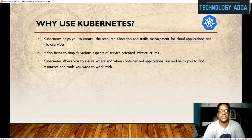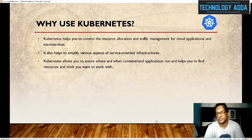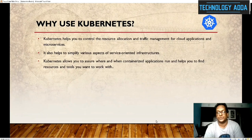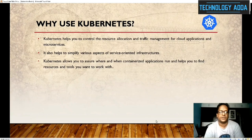Why use Kubernetes? Kubernetes helps you to control resource allocation and traffic management for cloud applications and microservices. Nowadays many cloud-based applications are deployed in Kubernetes. It has really very good features where we can deploy all microservices and handle them easily. Debugging is also easy, and it helps simplify various aspects of service-oriented infrastructure. Kubernetes allows you to assure where centralized applications run and helps you find the resource tools you want to work with.